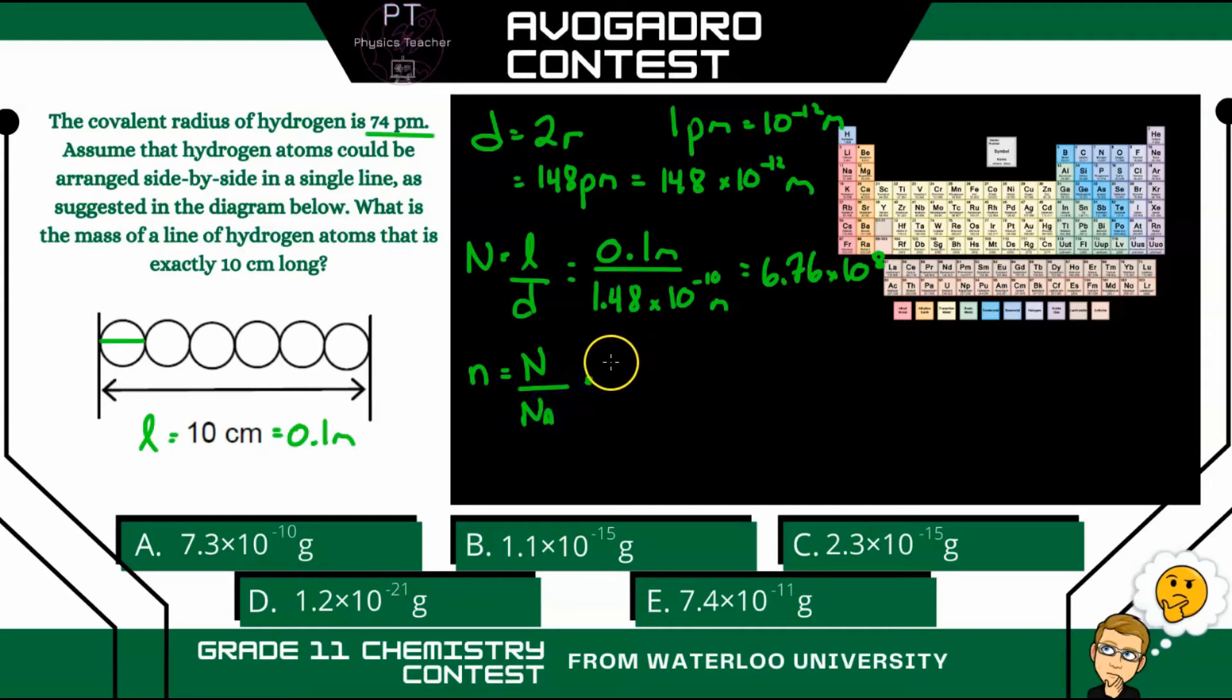So when we do this, we have 6.76 times 10 to the 8, all divided by Avogadro's number, 6.02 times 10 to the 23 particles per mole.